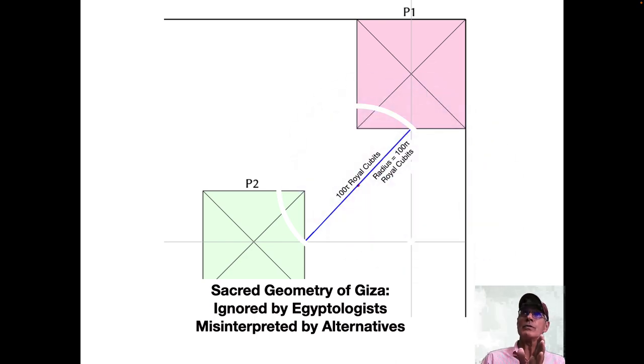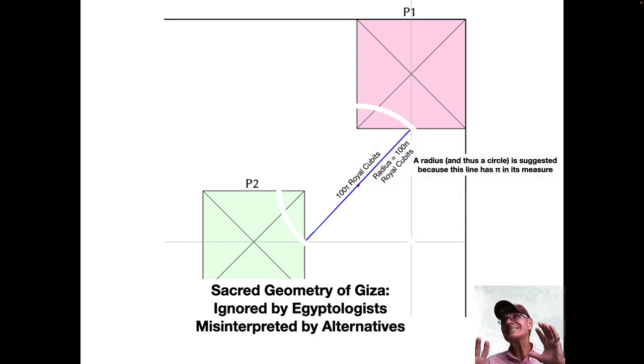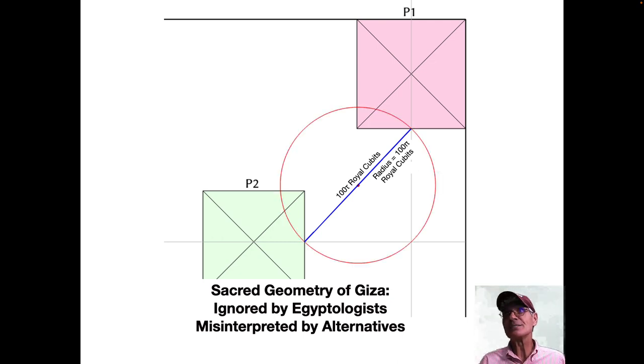So if you take the center point of that hundred tau royal cubit line, it would be 100 pi royal cubits. And I'm calling that a radius, because and thus the circle suggested because this line has pi in its measure, its measure is 100 times pi. So that's suggesting a radius or a circle. There it is. So it's 104.7 pi meters.